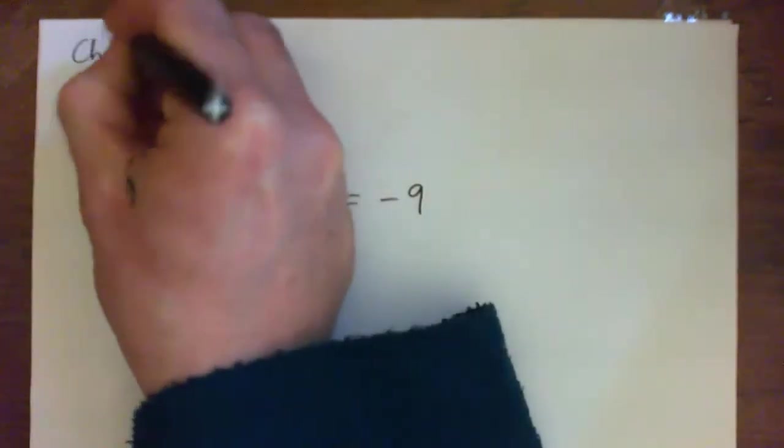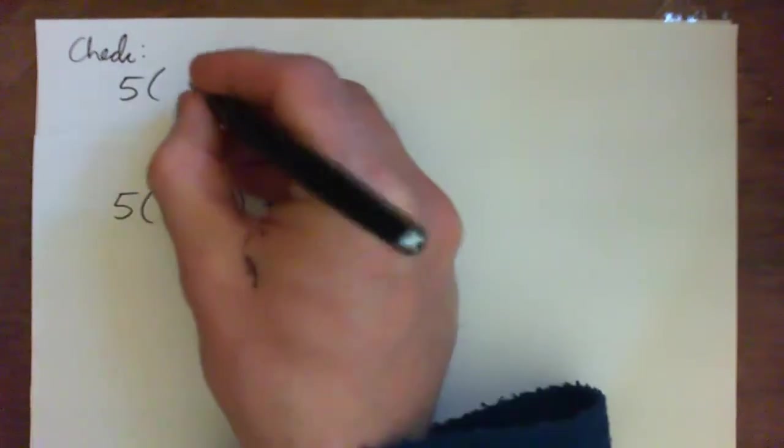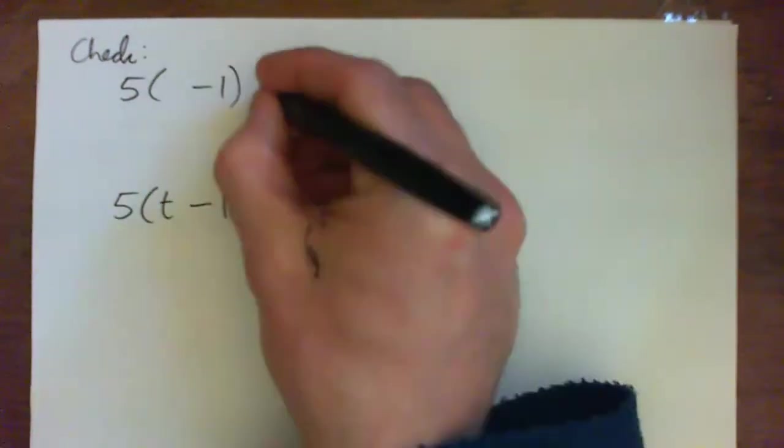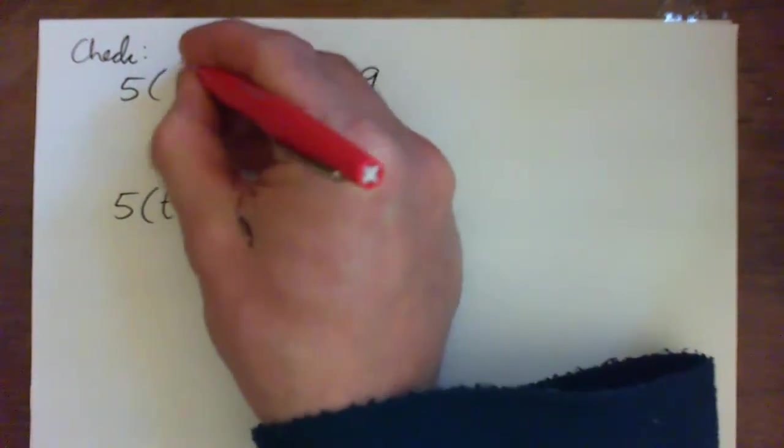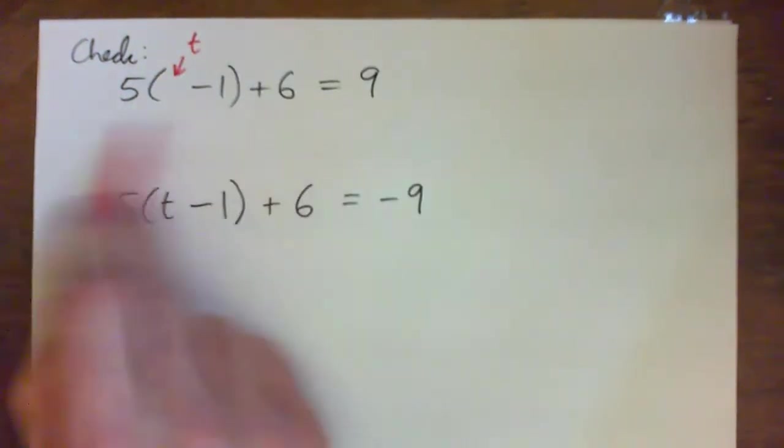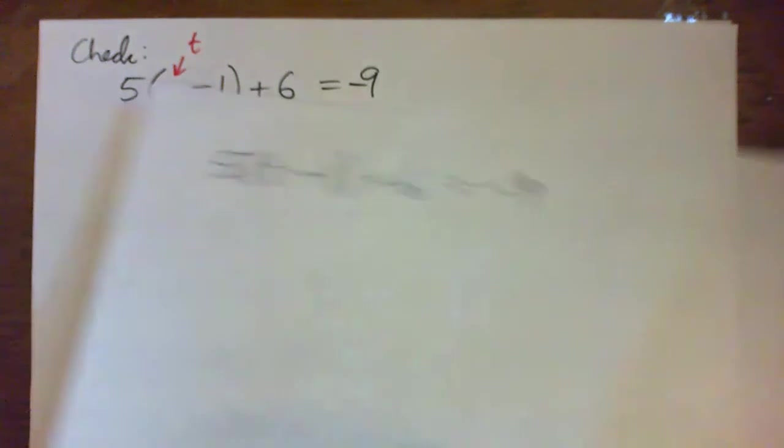So at the end we're going to check and it should be 5 times t minus 1 plus 6 equals negative 9. So whatever number we plug in for t here should make this side equal negative 9. Okay, so we'll check at the end.